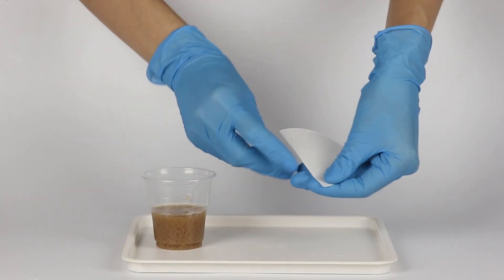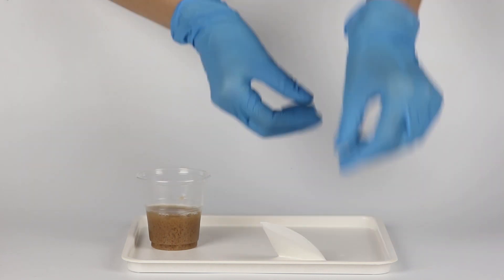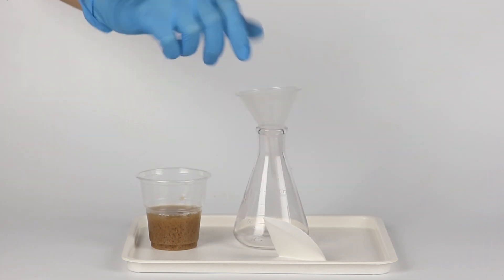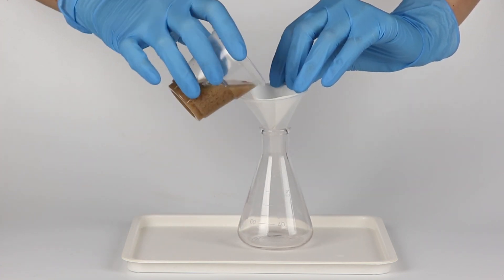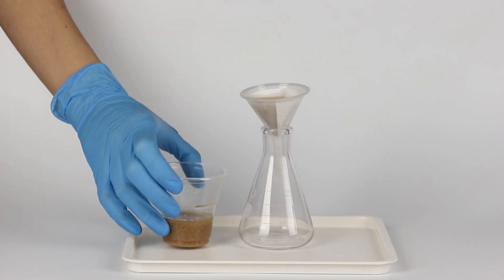Now fold the filter paper as shown here. Put the funnel into the flask and the filter paper into the funnel. Gradually pour the reaction mixture into the funnel to filter out the precipitate.